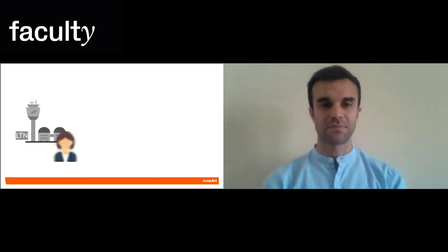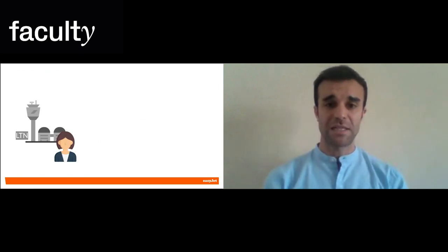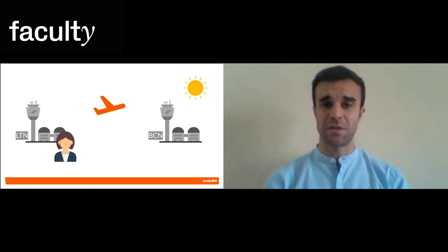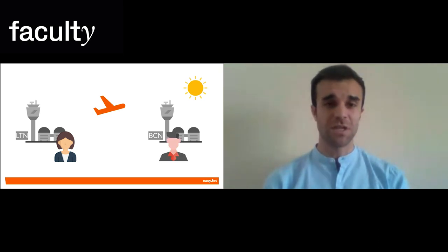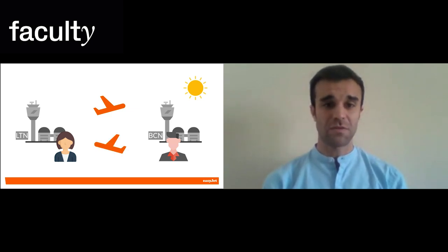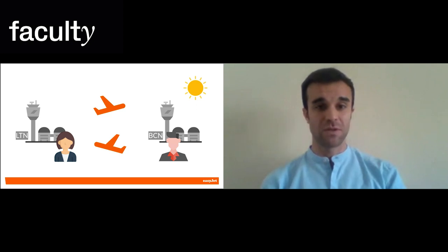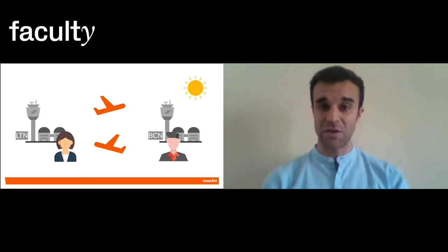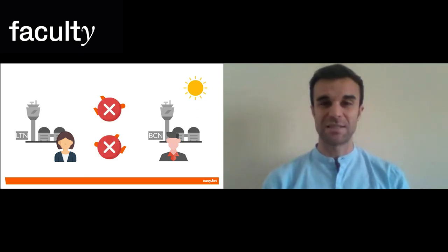Let me show you an example. We're in summer and Alice is in Luton about to take her flight to Barcelona to spend her holidays. And in Barcelona we have Bob who has bought tickets with EasyJet to go visiting his friends in Luton. Bob is waiting for the plane which is coming from Luton to go to London.